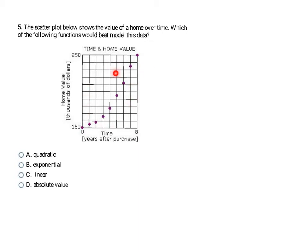Here they give us another graph and want us to decide if the shape is more similar to quadratic, exponential, linear, or absolute value. Remember, quadratic would be a U — it's not a U. Exponential kind of starts out flat and then rises, which this one kind of does. Linear would be a definite straight line, and this one has a bit of a curve. Absolute value would be a V, and that's definitely not a V. So my best answer is B, exponential.